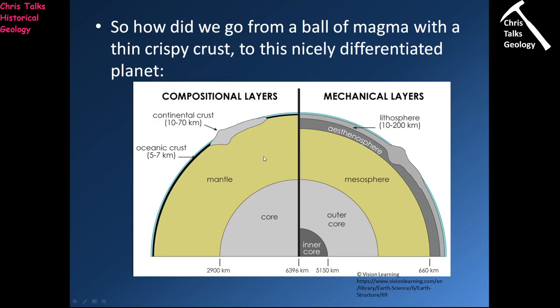The question is, how do we go from essentially a sea of magma to a nicely differentiated Earth? When it comes to differentiating the Earth, we can do it based on compositional characteristics or mechanical characteristics. The mechanical characteristics are quite straightforward — is the layer solid or is the layer liquid? In terms of compositional characteristics, the question is what the layer is made of. These layers are all chemically distinct from one another.